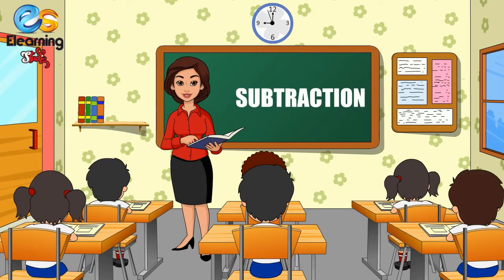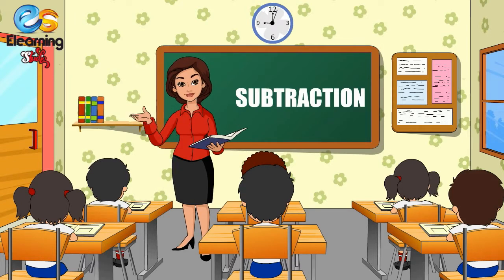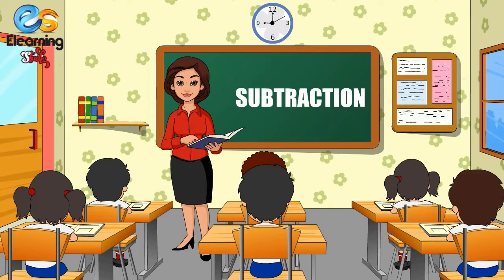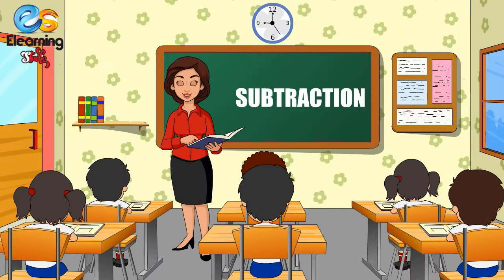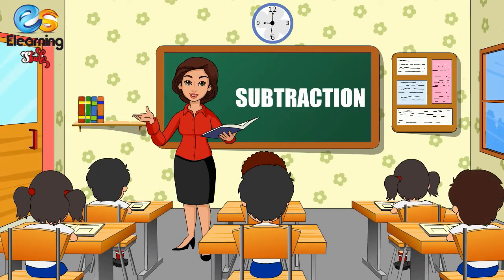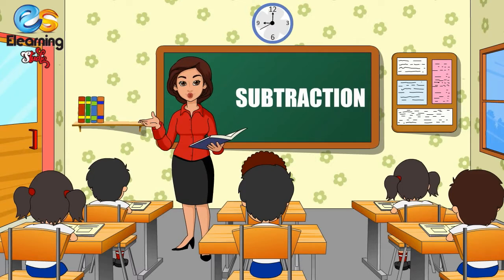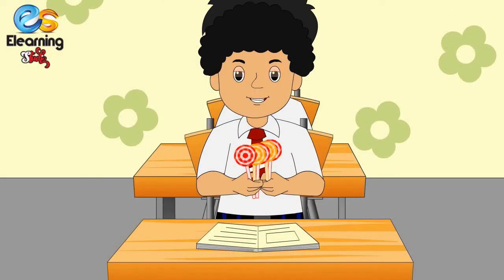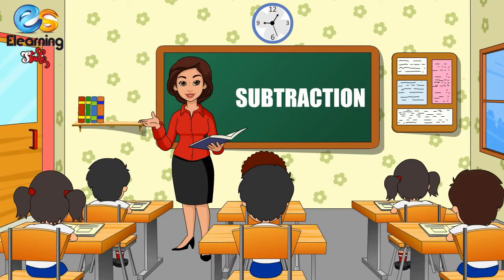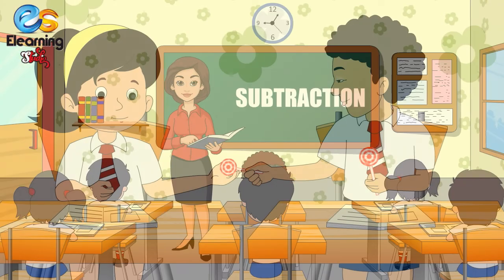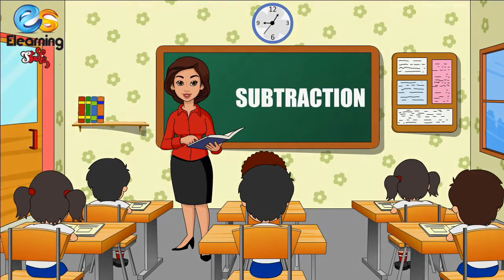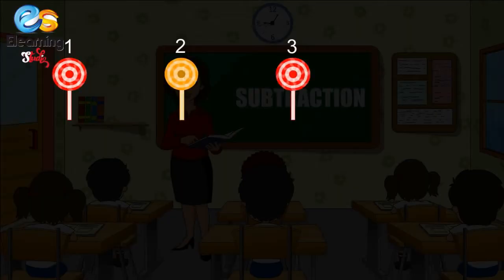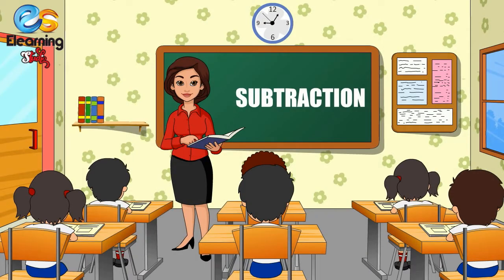Puneet, come here. Take these five lollipops — one, two, three, four, five. These lollipops are not only for you; you have to share them with your friends. Okay, ma'am. Now give one to Sharada.